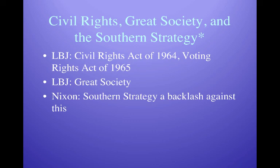Nixon ran in 1968 on what was called a Southern Strategy — a backlash against what was seen as the excesses of the 1960s: the civil rights movement, the feminist movement, drugs, sexual openness, Woodstock, controversial music. Nixon appealed to traditionalists with a message of law and order, return to traditional values, limited government, and appealing to traditional blue-collar voters. This is when the South began to shift away from the Democratic Party and toward the Republican Party.